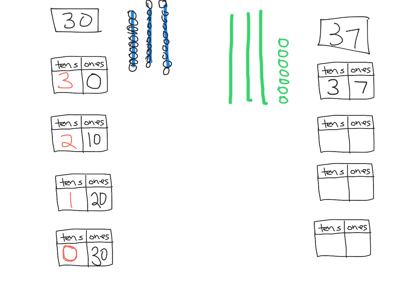If I want to take one of these quick tens and cash it in for individual units, I count out ten ones. So now the question is, what do I have? Now I have two tens, right here, and now I have 17 ones.